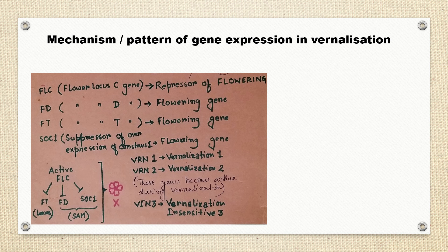These three genes are very important in the mechanism of vernalization. FLC is a repressor of flowering, but the other two — FT and FD — are flowering genes, meaning they promote flowering.